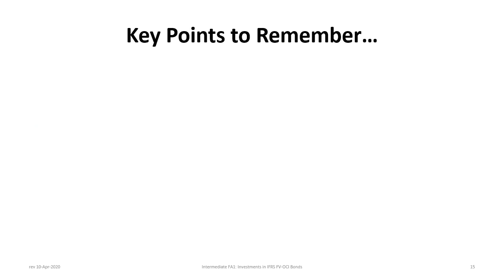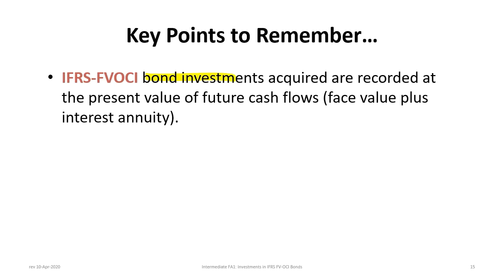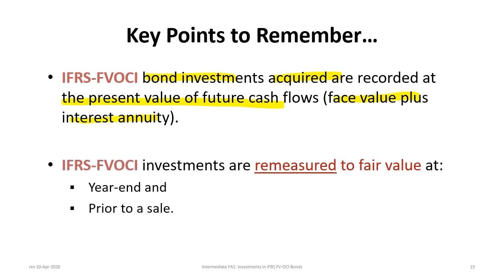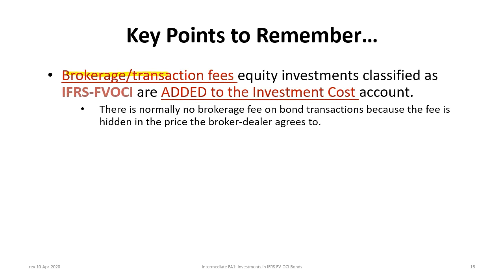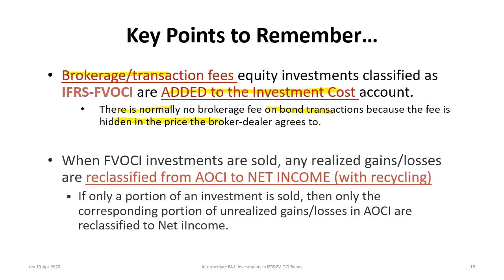That was a lot of work! Let's close out with some key points to remember. FVOCI bond investments acquired are recorded at their present value of future cash flows — the face value plus the interest annuity. FVOCI investments are remeasured to fair value at year end and prior to a sale: at year end, all bonds are remeasured; prior to a sale, only the portion sold is remeasured. Transaction fees are added to the investment account, but bond transactions typically have no separate brokerage fee as it's hidden in the price. When FVOCI debt investments are sold, any unrealized gains and losses are reclassified from AOCI to net income — this is called recycling. If only a portion is sold, then only the corresponding portion of unrealized gains and losses in AOCI is reclassified.